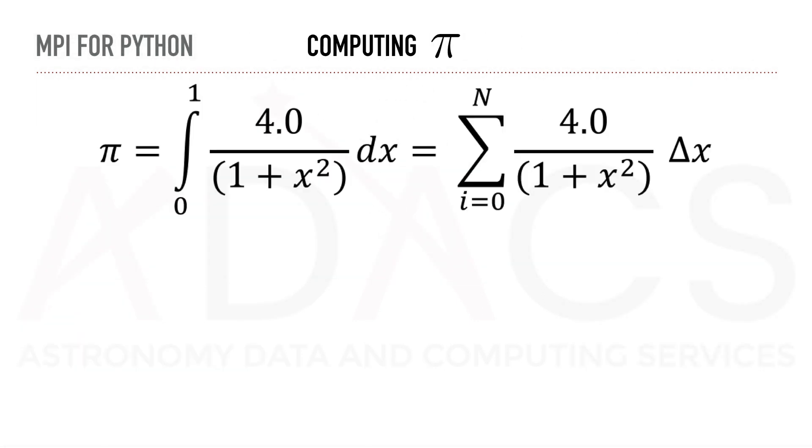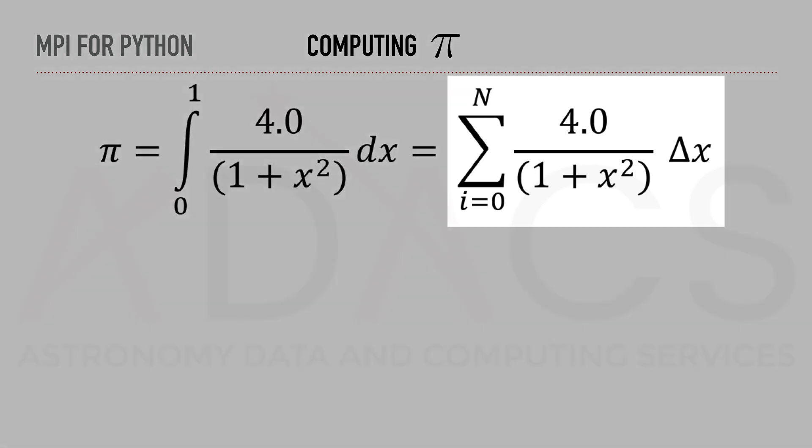To illustrate how to use collective communication patterns, we will proceed with the example of computing PI. There are many algorithms to compute PI. In this example, we will use the following approximation using a summation.